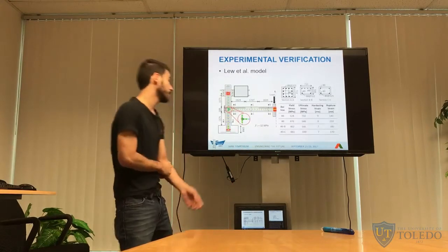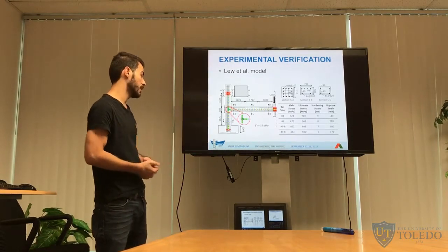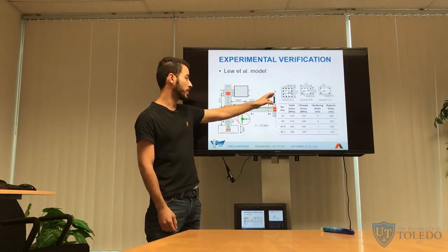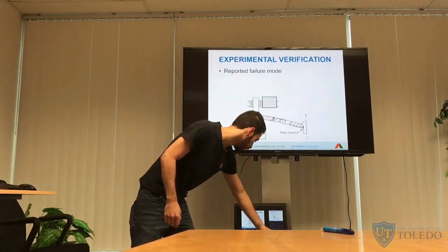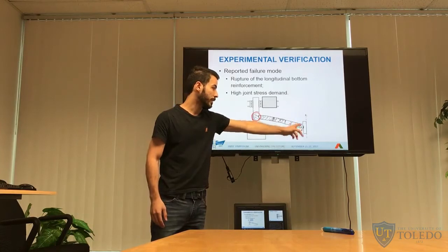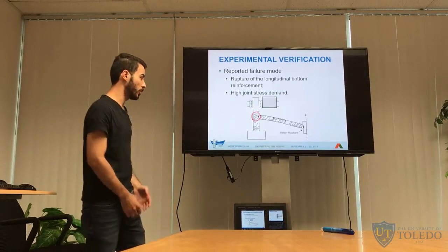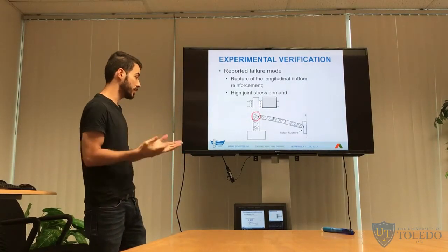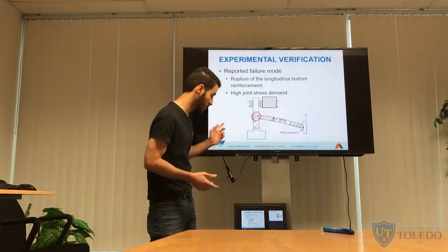In this study, we used a frame experimentally tested by Liu et al. It is a simple frame configuration, and we show only half of it. The rebar material properties and cross-sections of each member are provided. The reported failure mode was rupture of the longitudinal rebar at the bottom at the face of the center column. Although the beam-column joint was not the critical failure mode, the frame exhibited high joint stress demand, allowing us to assess the impact of beam-column joints on a progressive collapse analysis.